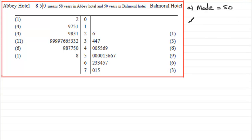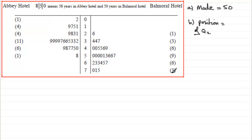For part b, we need to work out the quartiles: the lower quartile Q1, the median Q2, and the upper quartile Q3. Starting with the median Q2, we need to find its position. To do that, we take the total number of values, add one, and divide by two. We have 28 values in total, so the position is (28 + 1) ÷ 2 = 29 ÷ 2 = 14.5.